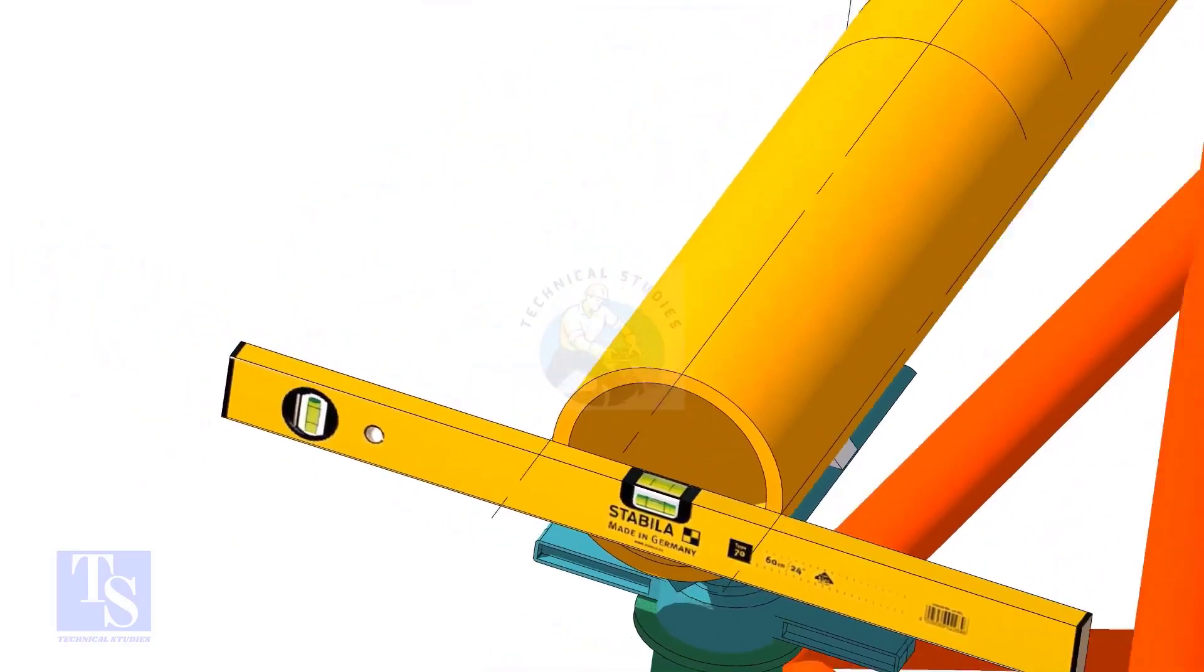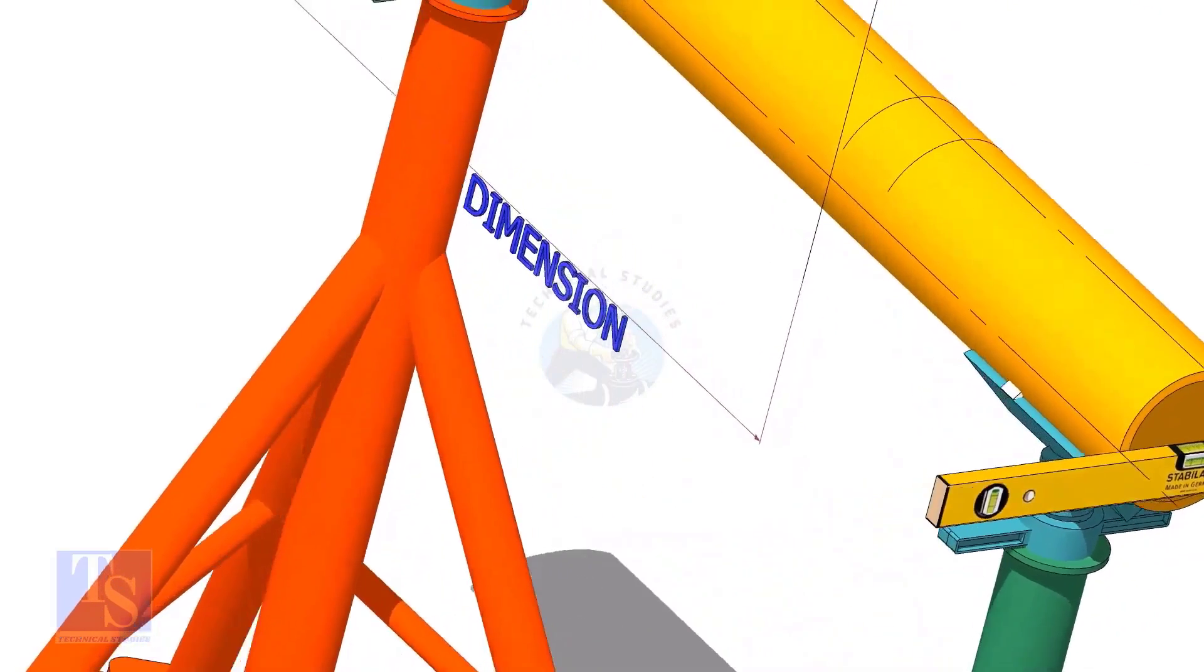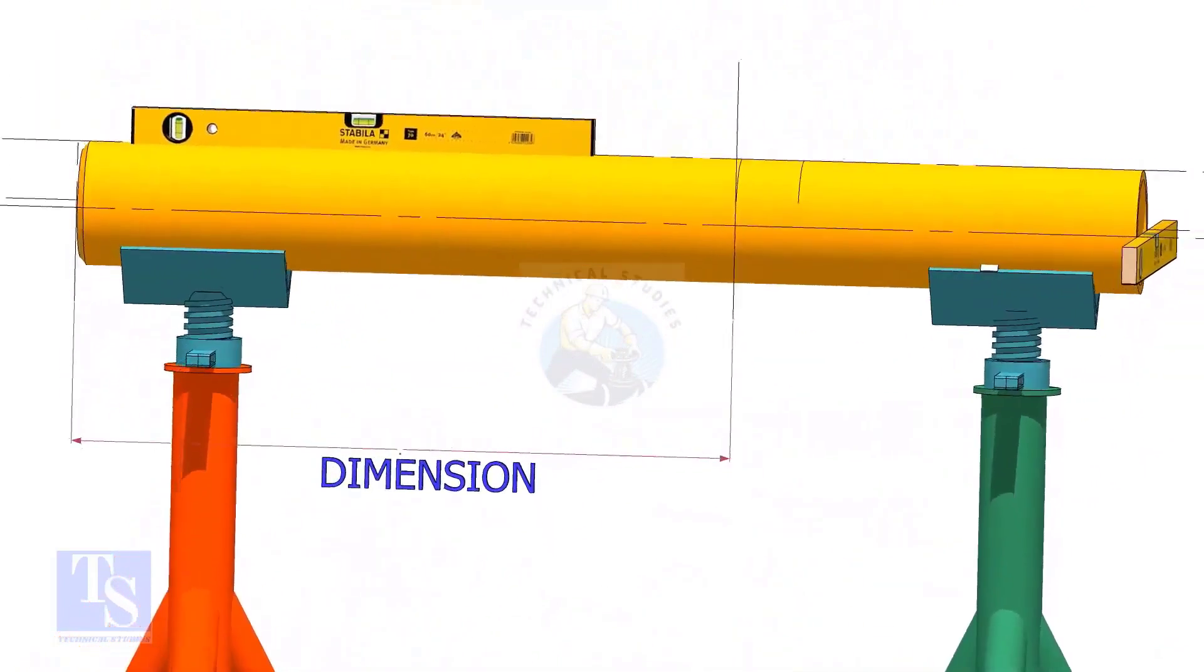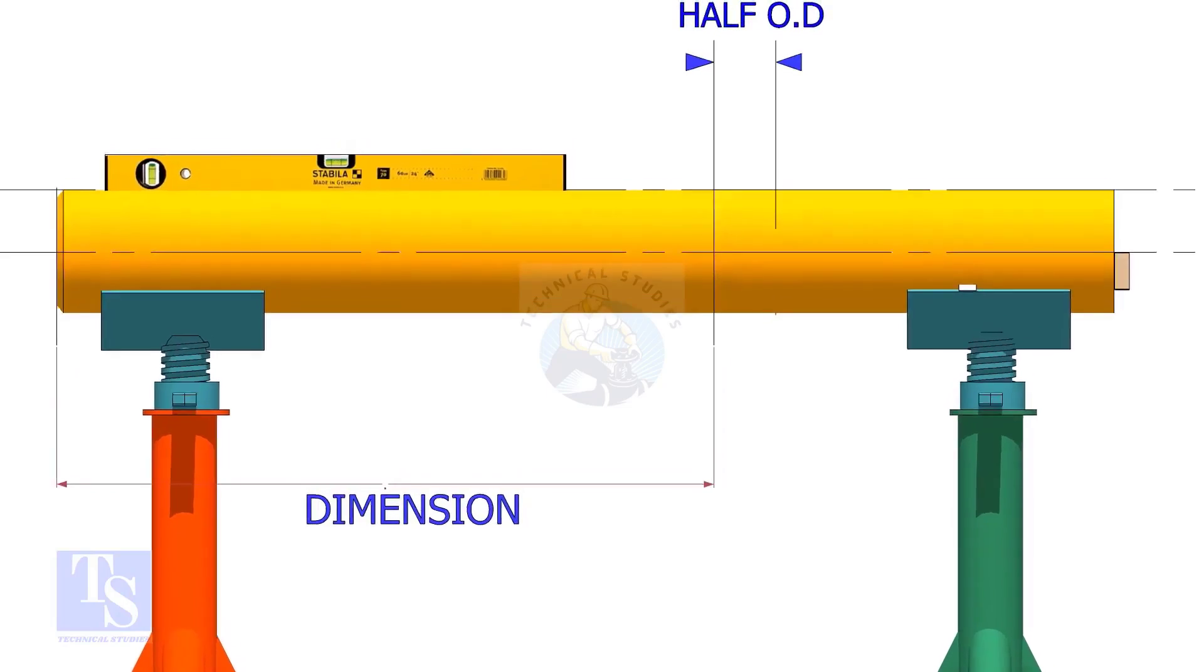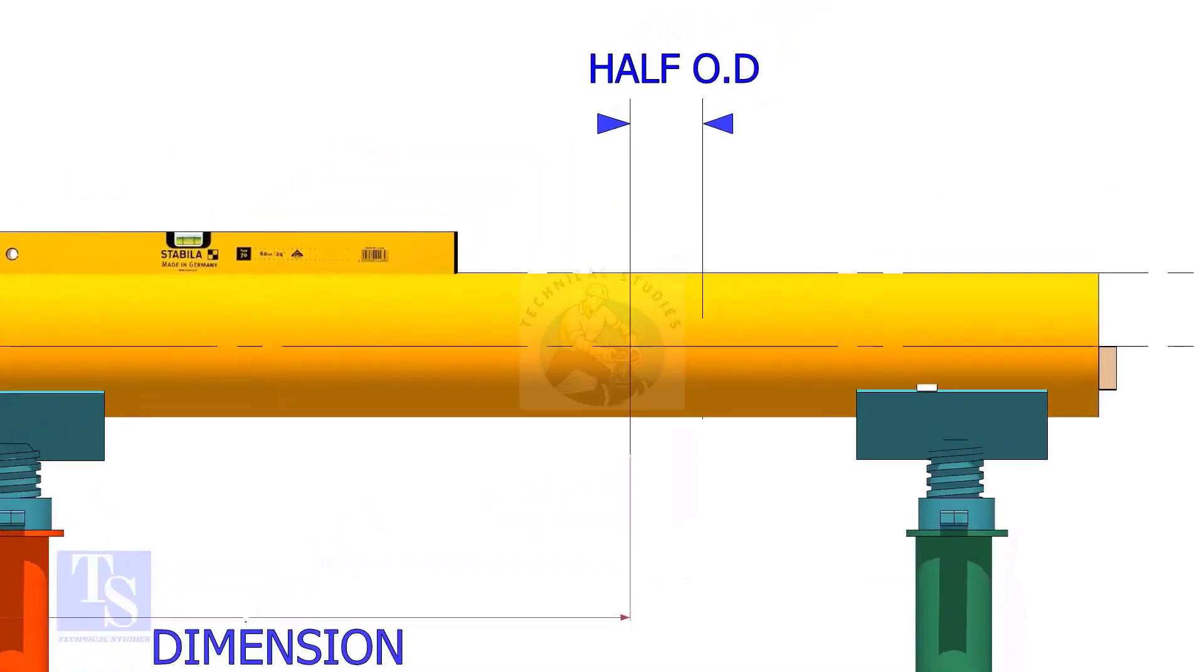Mark the center of the laterolette as per the drawing. Mark half OD of the header in the direction of the laterolette on the top of the pipe. This line is actually for inspection purposes only.